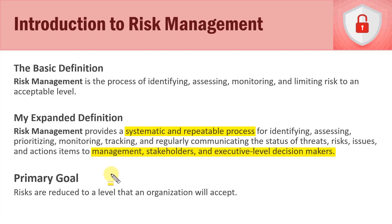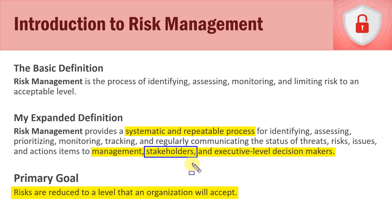We communicate risk status to managers, various stakeholders within the organization, and executive-level decision makers when a risk needs their attention. The primary goal of risk management is to reduce risks to a level the organization will accept. The goal isn't to eliminate all risks — that would be unrealistic, impossible, and extremely expensive. We have to work within budgetary and personnel constraints.